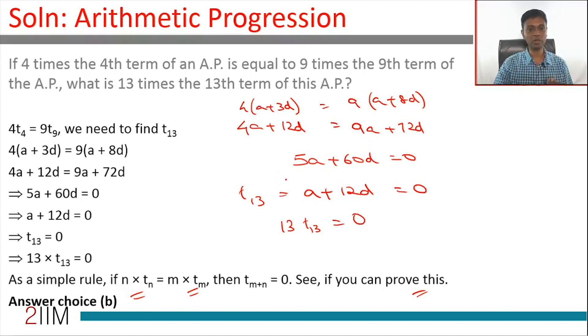N times TN is equal to M times TM, the Mth term, this means the M plus Nth term should be 0. See if you can establish that.